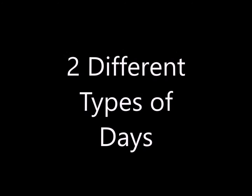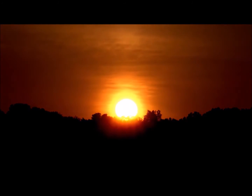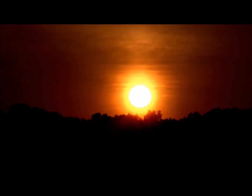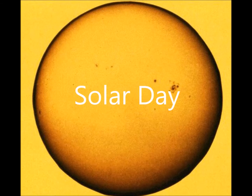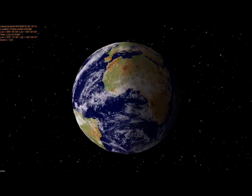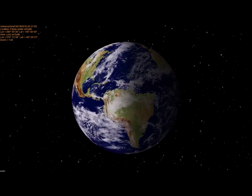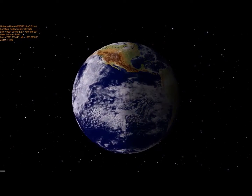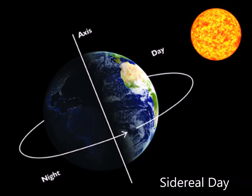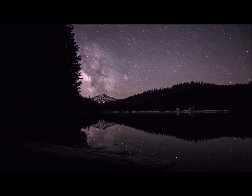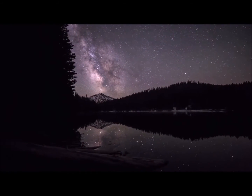What I've just described are actually two different types of days which we define differently. The first one, involving the time from one sunrise to the next, is known as a solar day. The second, which involves the rotation of a planet on its axis, is known as the sidereal day. We measure this time according to the positions of the background stars.